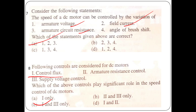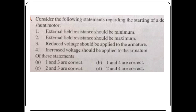Reduced voltage should be applied to the armature at starting of a DC shunt motor. This is the correct statement. External field resistance should be minimum so that a stronger field is produced. Reduced voltage should be applied to the armature so that the armature current is limited.